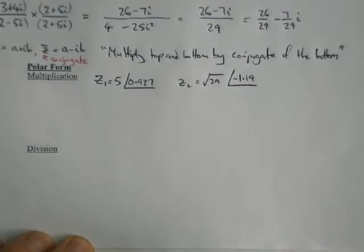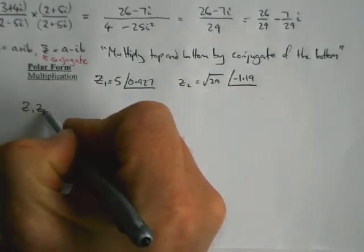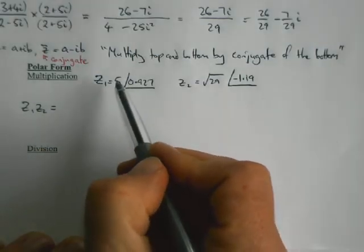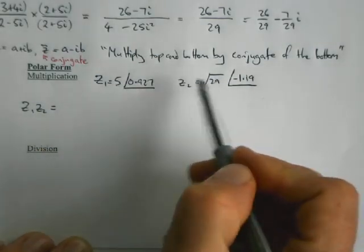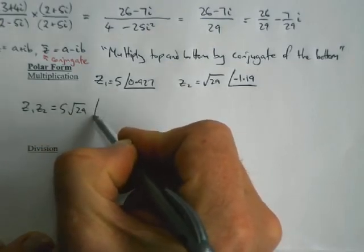Okay, to do multiplication. So if I want to do z₁ times z₂, then the way it works is that you multiply the magnitudes, so just multiply 5 times √29, and you add the two angles.